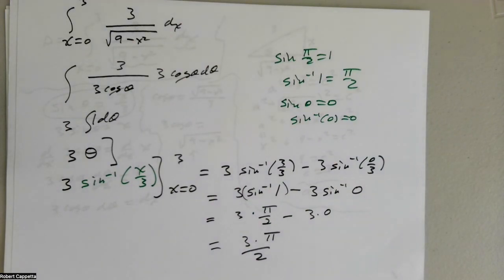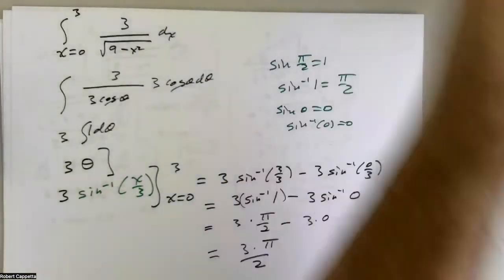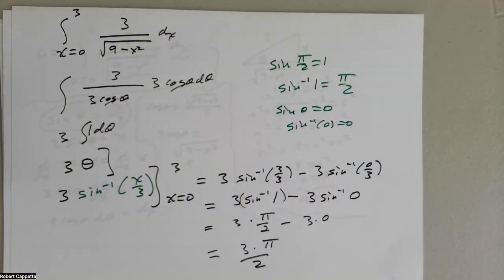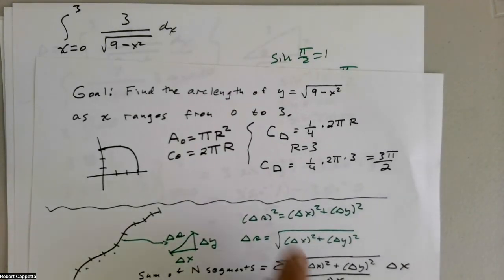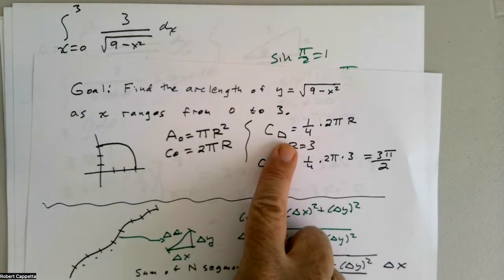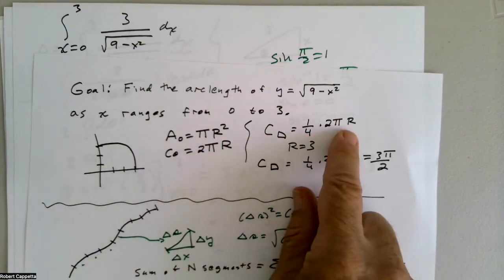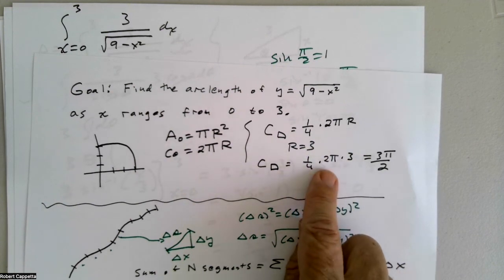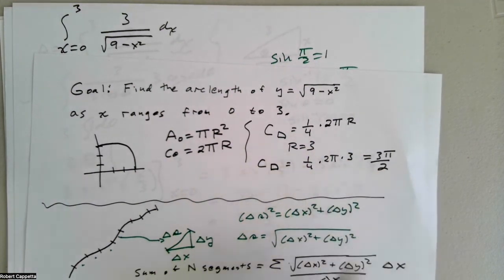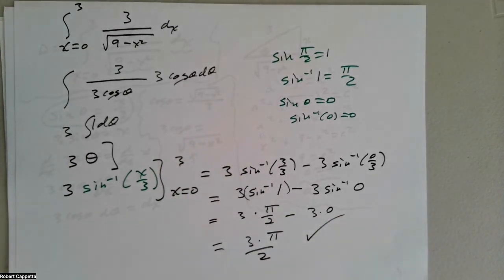We just developed with calculus what we did immediately with geometry. Reflecting back: the circumference of the quarter circle is (1/4) · 2πr = (1/4) · 2π · 3 = 6π/4 = 3π/2. The calculus answer agrees with the standard geometric result.